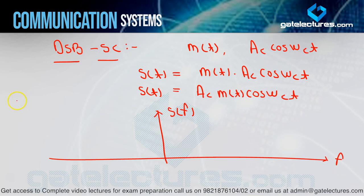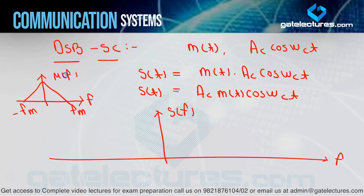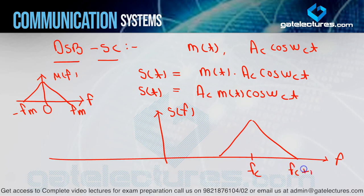If I consider the Fourier transform of m(t) as a triangle, then m(t) has components at −FM and +FM. This same m(t) spectrum will shift once by +FC and once by −FC. Adding +FC to all frequency values gives components at FC, FC+FM, and FC−FM. Similarly, subtracting FC gives components at −FC, −FC+FM, and −FC−FM. For detailed drawing, refer to my previous videos.